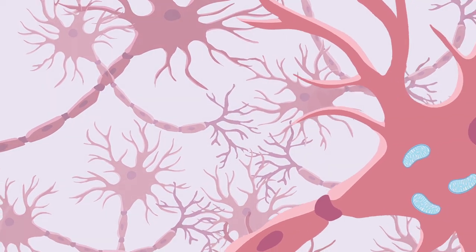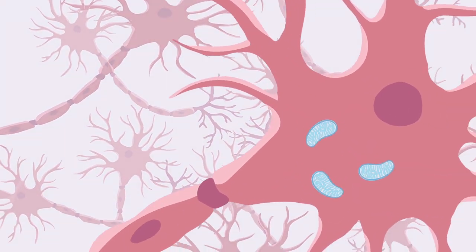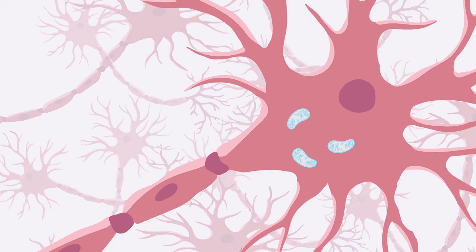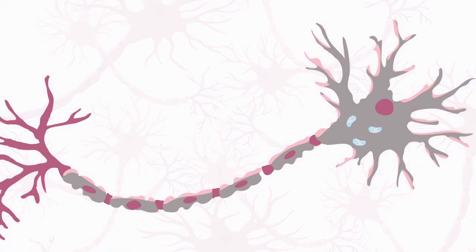Some inherited forms of early-onset Parkinson's disease have typically been blamed on poorly functioning mitochondria, the powerhouses of cells. Without reliable sources of energy, neurons wither and die.